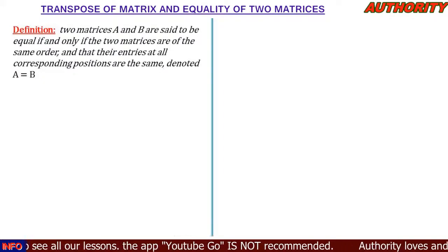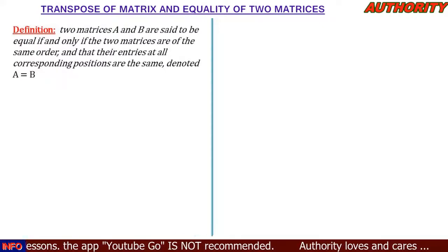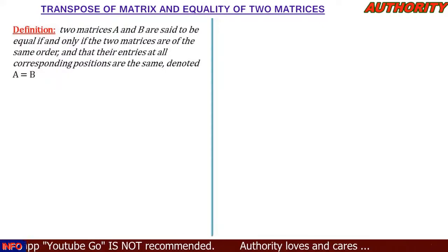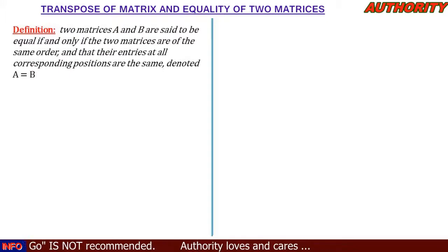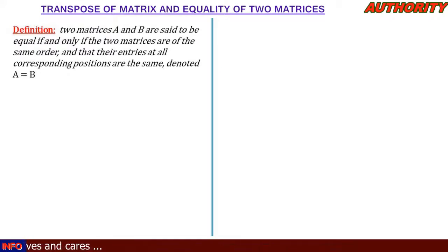When you have two matrices, they are equal if and only if: the first condition — they are of the same order; and the second condition — their entries at all corresponding positions are equal.